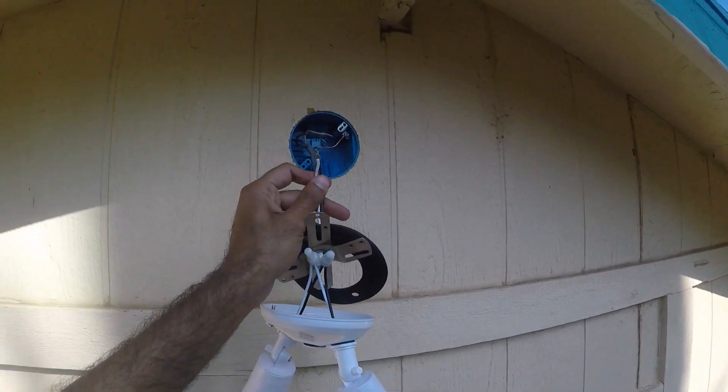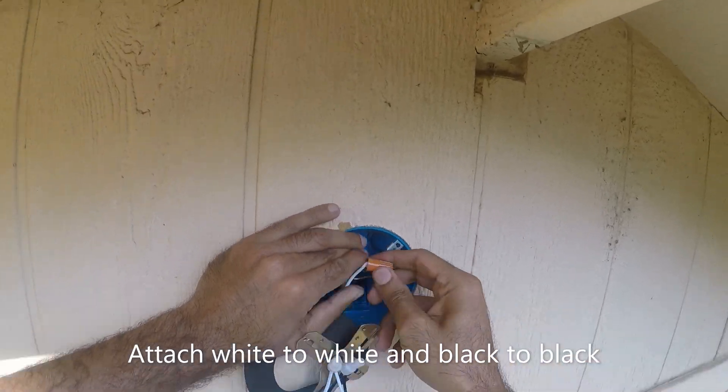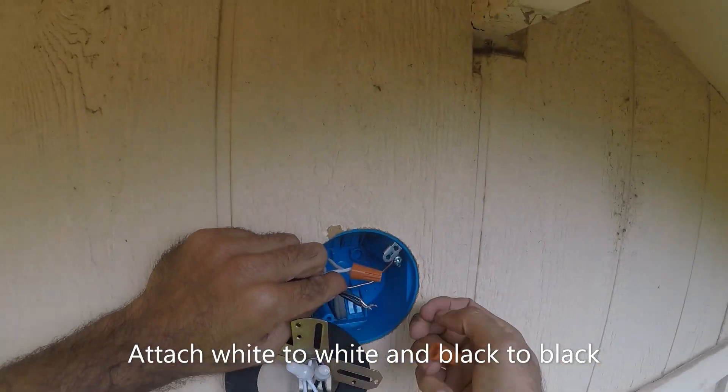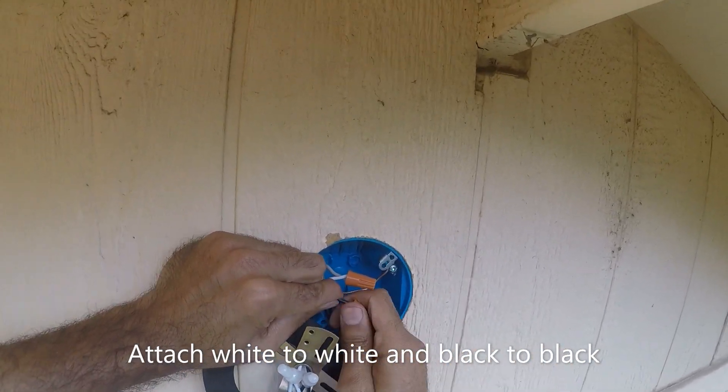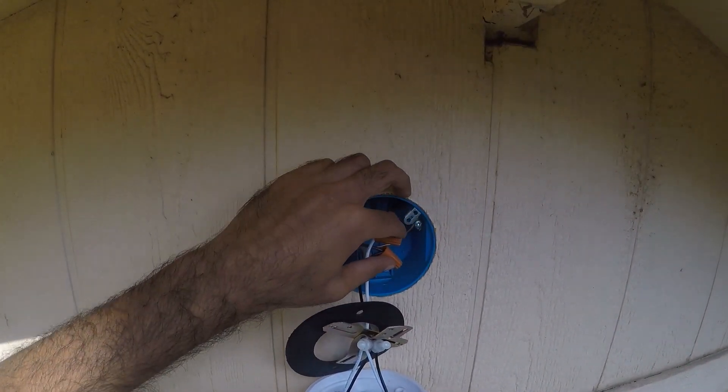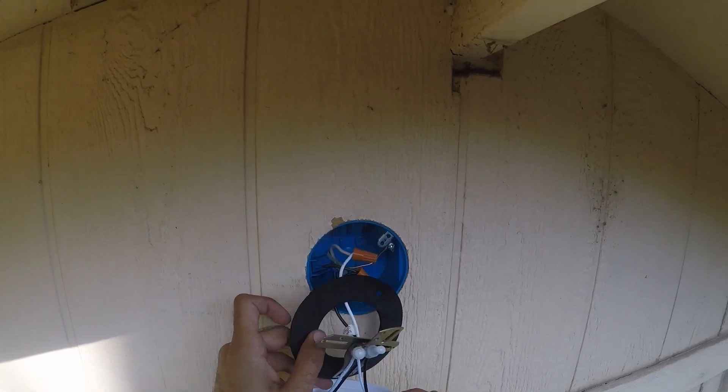Then we attach the white to the white and the black to the black. Okay, so after we've got the wires attached here, we're going to attach the swivel bracket.